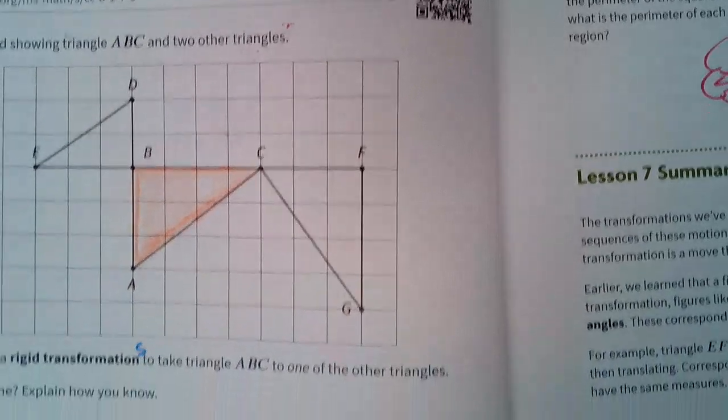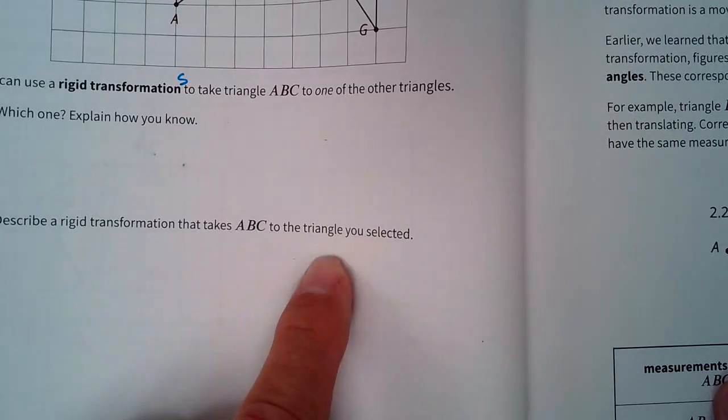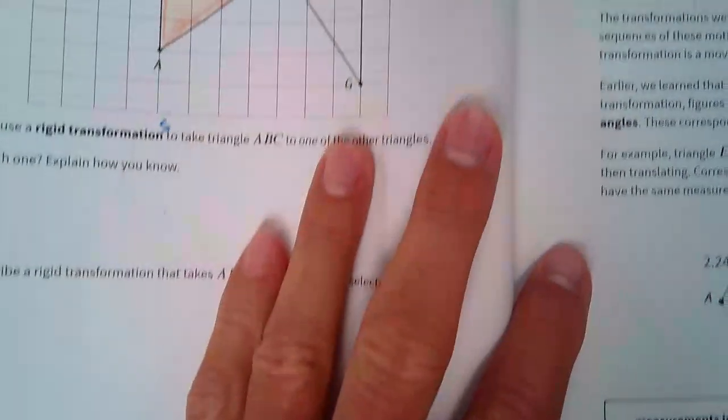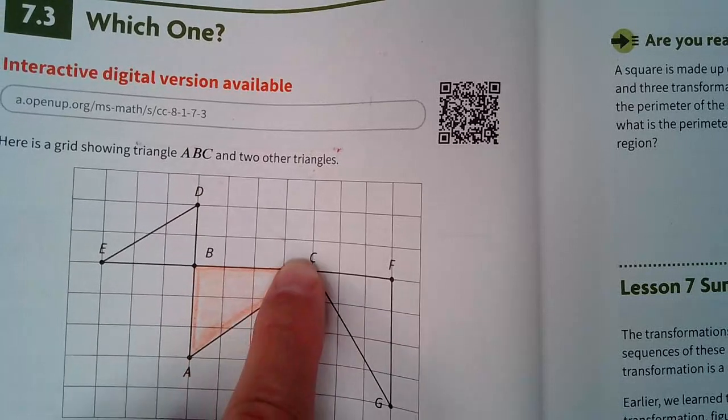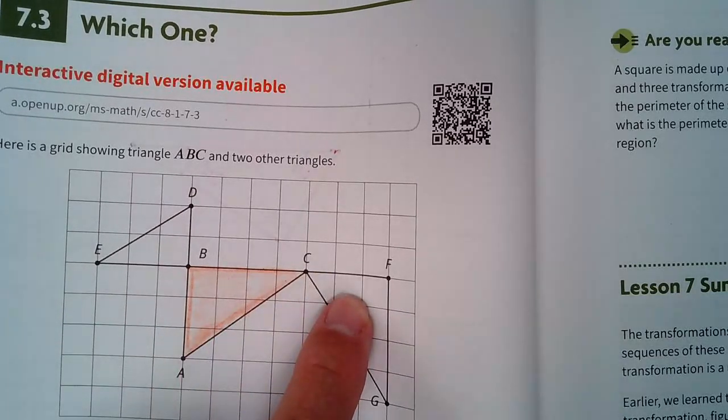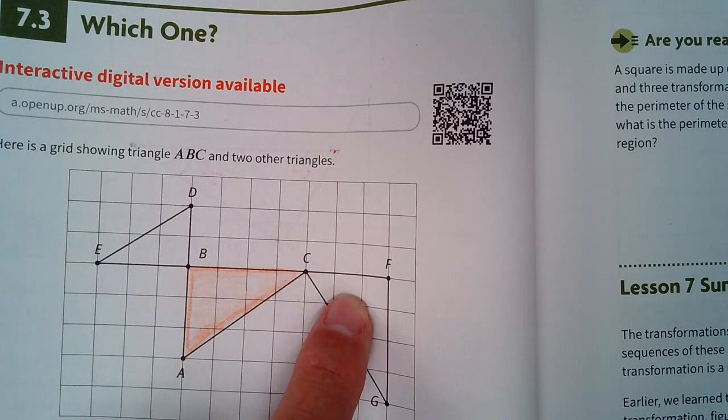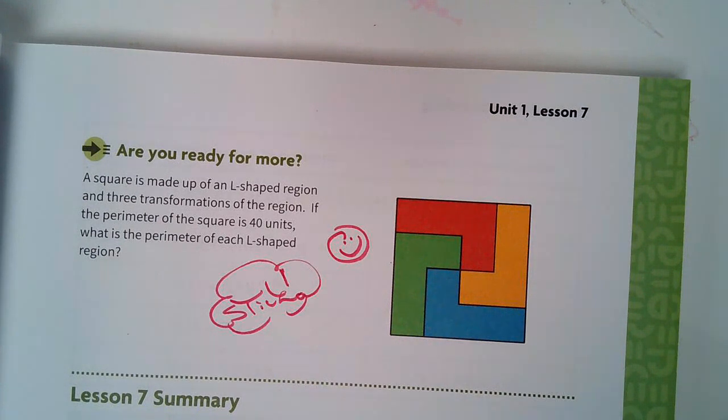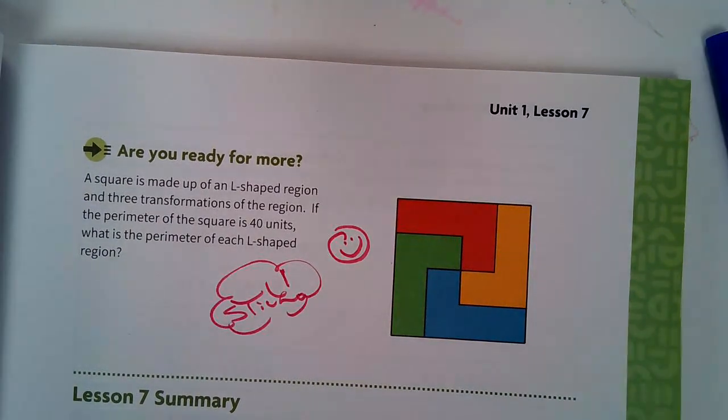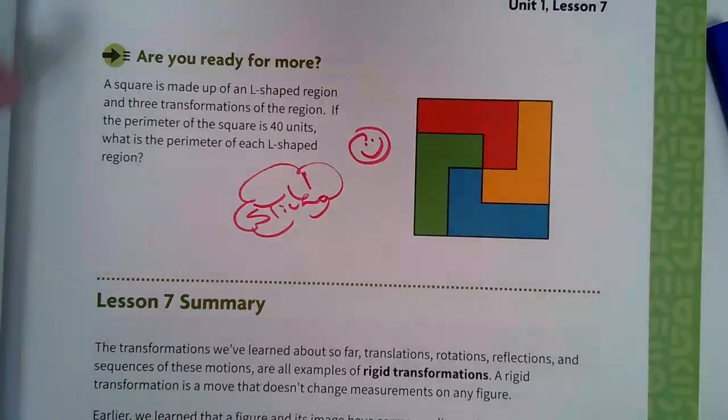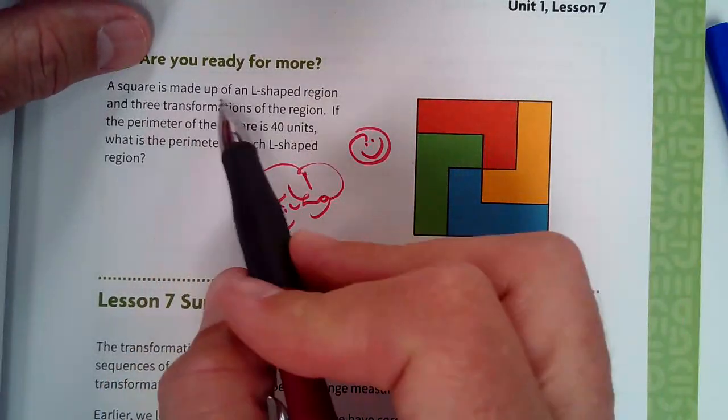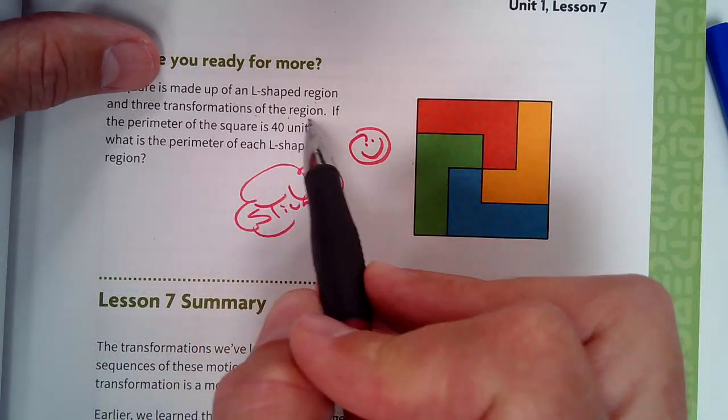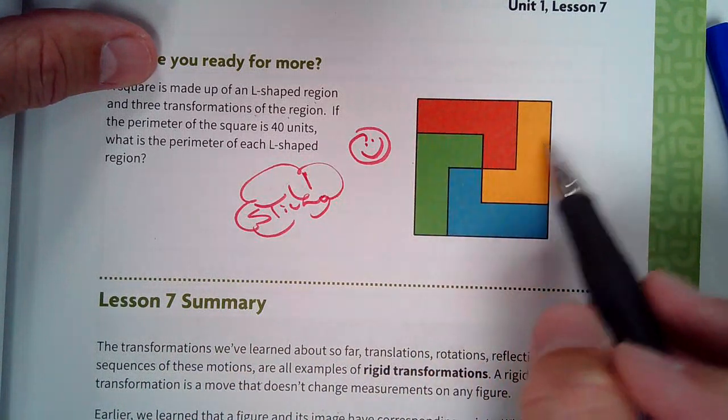All right, and then number two, it says describe a rigid transformation that takes ABC to the triangle you selected. So again, they didn't make that plural, so maybe there is just one move you could make to bring it there. But is it supposed to fill that entire space? No, I mean, you could probably just tell me in one sentence. No, but is the triangle supposed to fill up the entire space? Well, if you use some transparent paper here and then laid it over this one, you would see that it would be the same size, if that's what you're asking. All right. All right, now this one here is worth a stick tomorrow. And let me explain it to you really quick here. Top of page 57, it says, are you ready? It says a square is made up of an L-shaped region and three transformations of the region. So you can see the L's in this square. There's one, two, three, four of them.